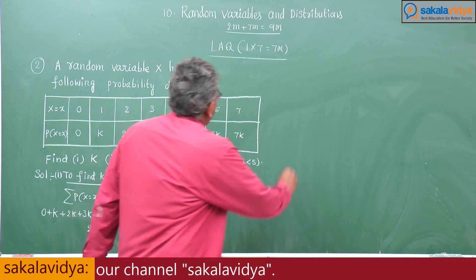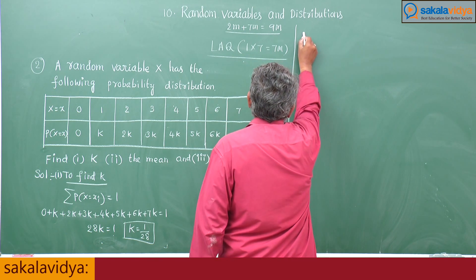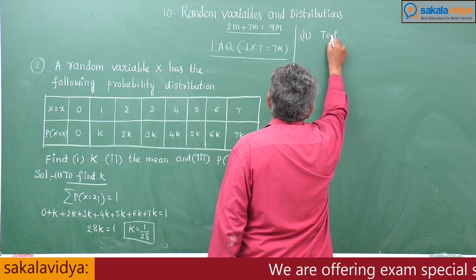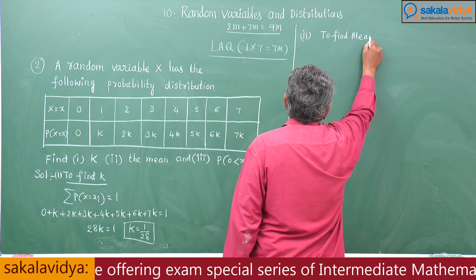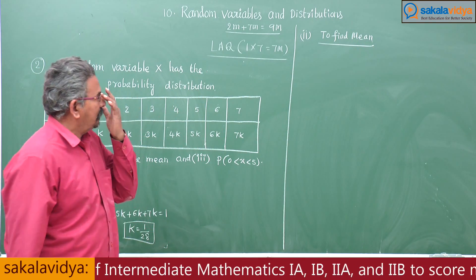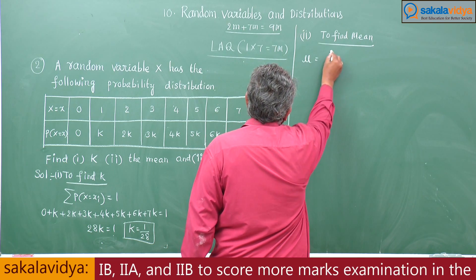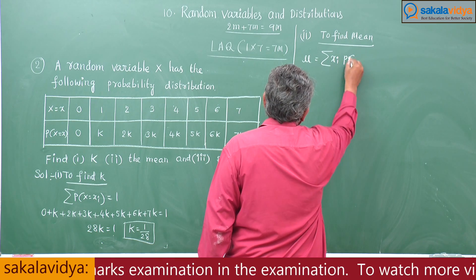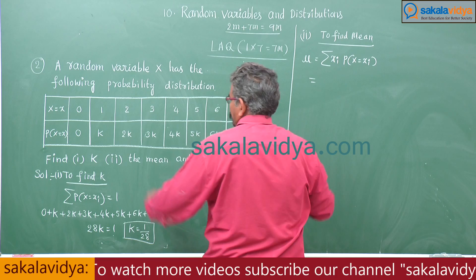Now, next, to find mean. We have to find out the mean. The mean formula mu is given by sigma Xi into P of X equals Xi. This is the formula.